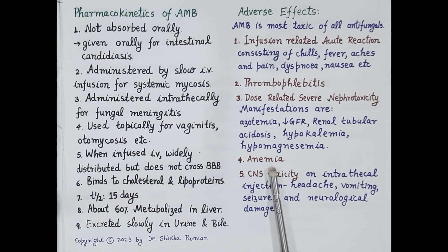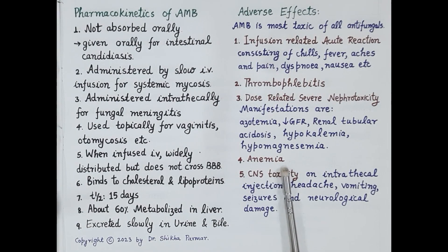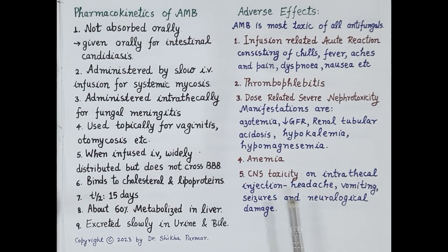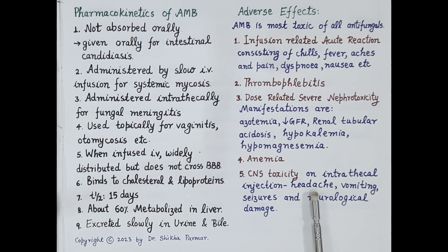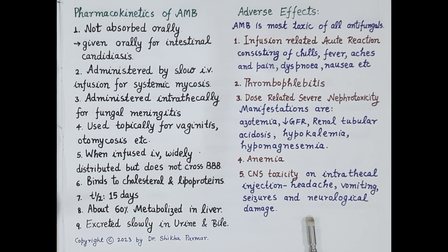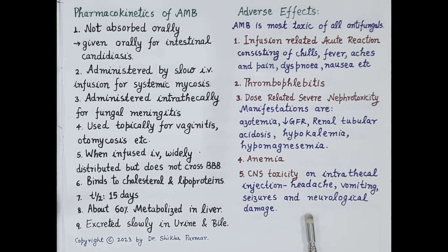In addition, reduced secretion of erythropoietin by the kidneys causes anemia. Central nervous system toxicity can also occur due to intrathecal administration, manifested by headache, vomiting, seizures, and urological damage. The toxicity of amphotericin B is high, making it very challenging to administer; extensive monitoring is required.